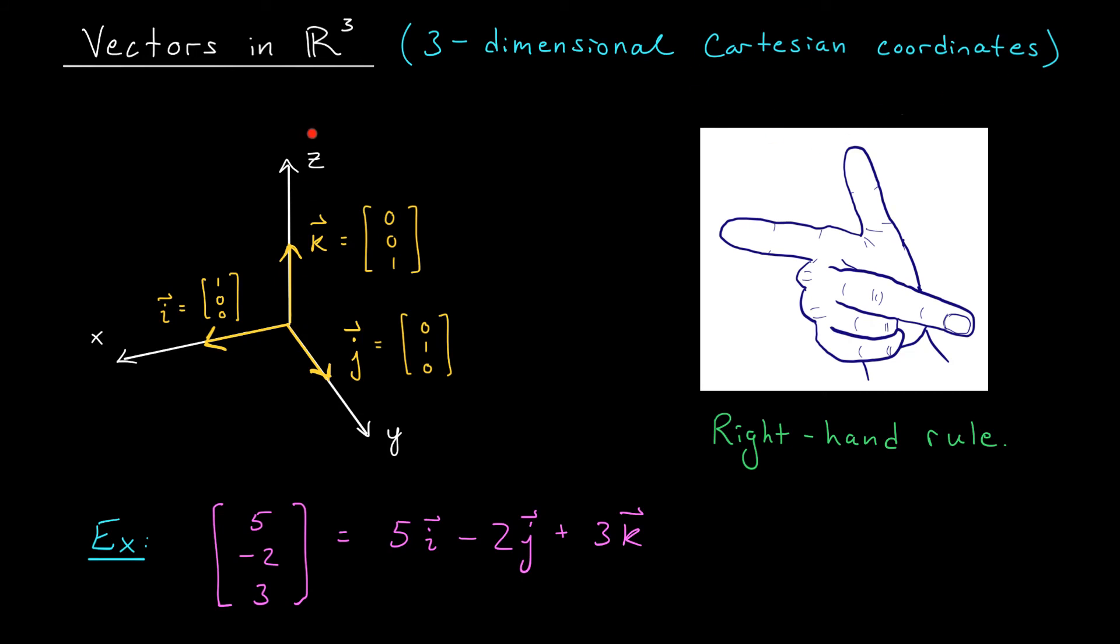To orient ourselves in this space, we follow the right-hand rule. It says that if you stick out your thumb, index finger, and middle finger from your right hand, then your thumb will be pointing in the direction of the positive Z axis, your index finger will be pointing in the direction of the positive X axis, and your middle finger will be pointing in the direction of the positive Y axis. Go ahead, give it a try.